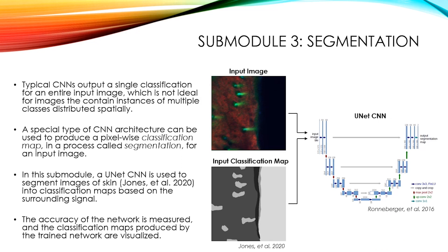Submodule 3 is segmentation. Typical CNNs output a single classification for an entire input image, which is not ideal for images that contain instances of multiple classes distributed spatially. In this case, we need a special type of CNN architecture that produces a pixelized classification map — a process called segmentation — for the input image. In this submodule, a UNET CNN is used to segment images of skin into classification maps based on the surrounding signal, and the accuracy of the network is measured and the classification maps are visualized.